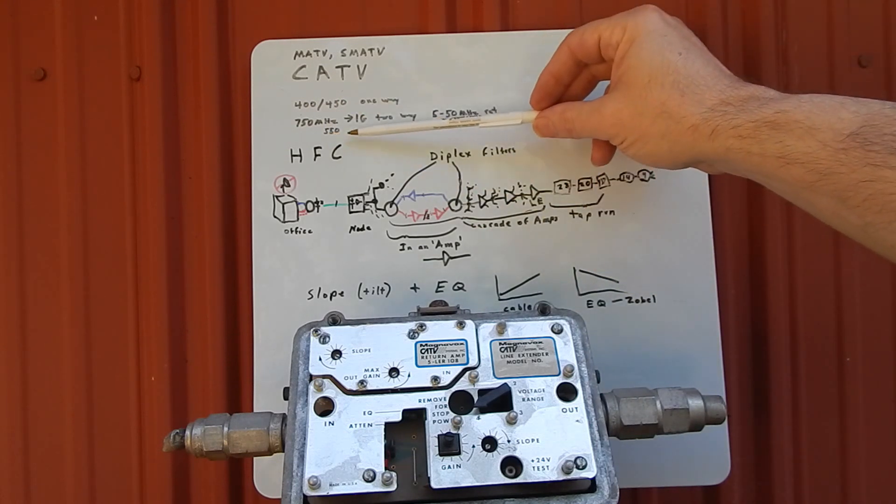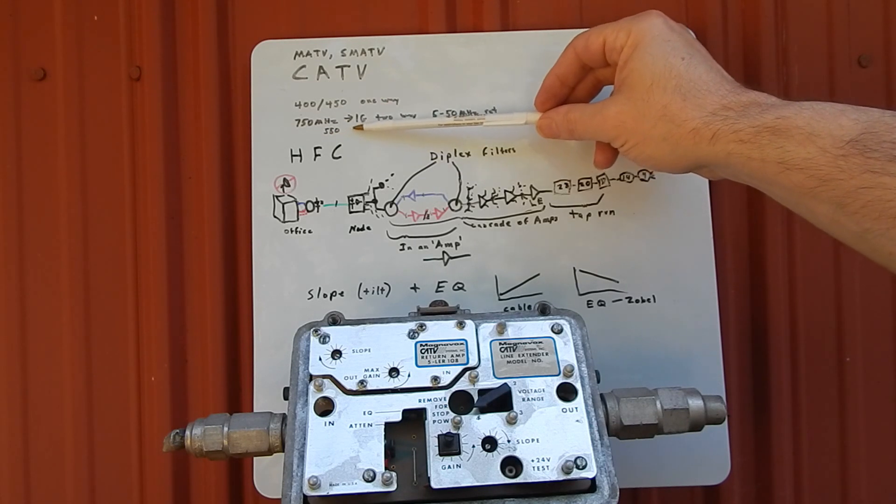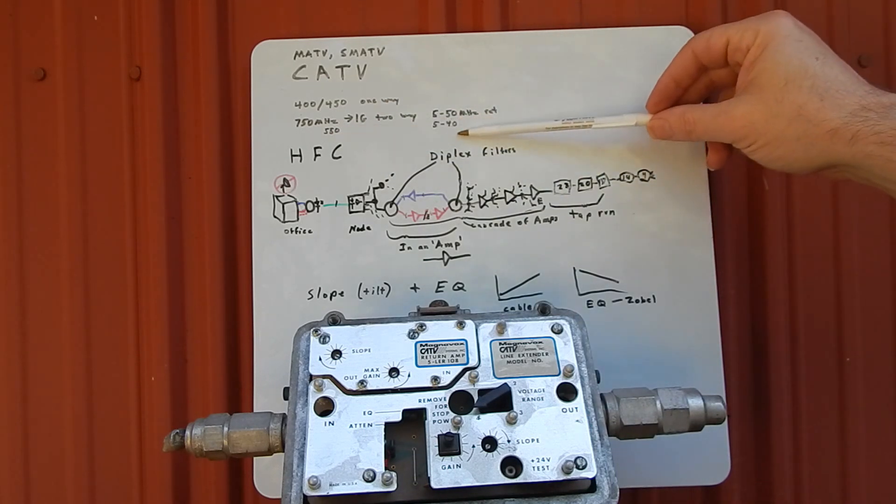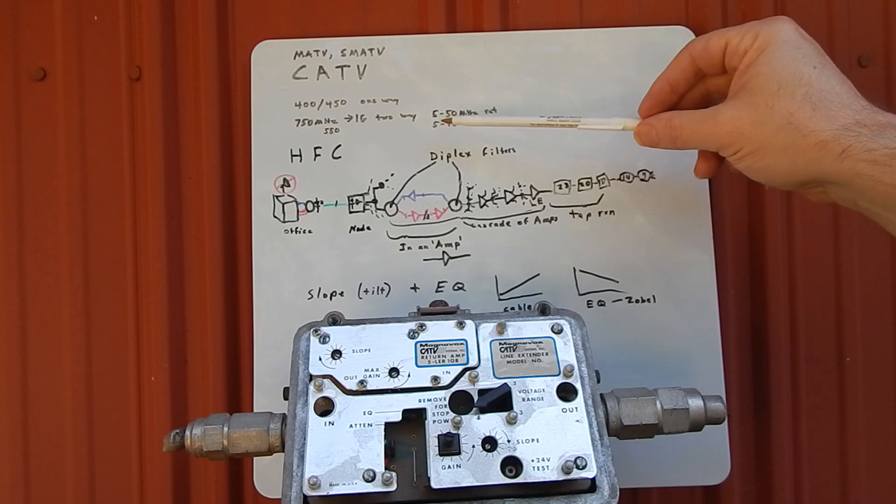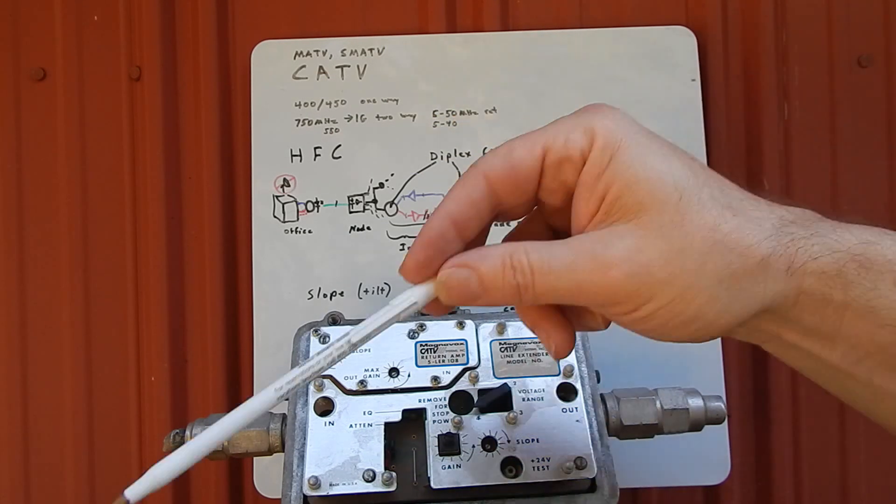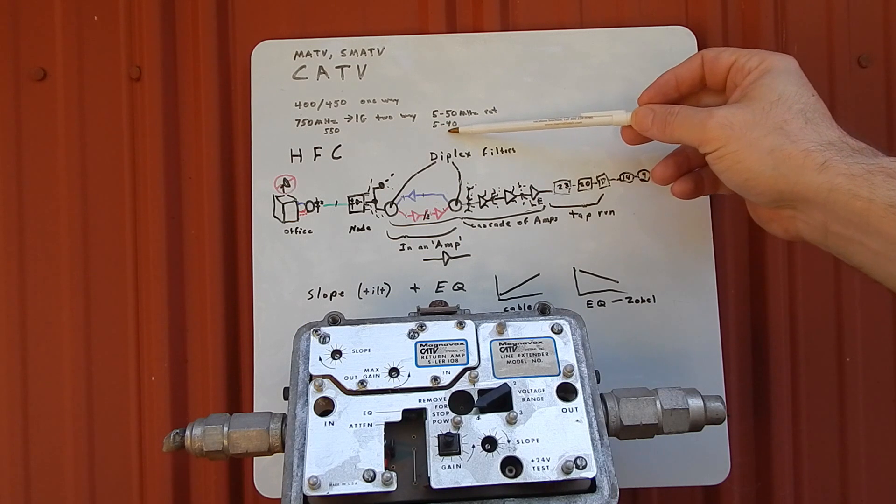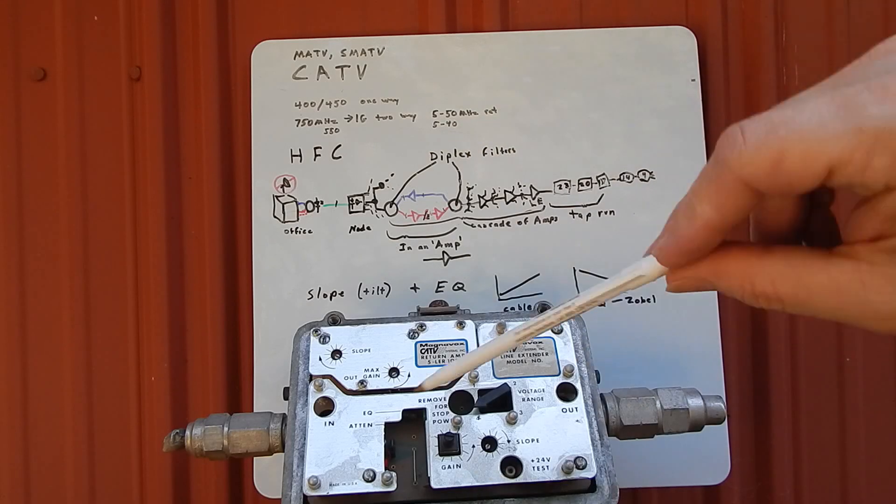They didn't intentionally give themselves such a small area, this 5 to 50. In fact, the last system I worked at was an older system, only 550 megahertz and only 5 to 40 megahertz return. That's because the diplex filters in these amps weren't as tight as they are in modern amps. From 50 megahertz going one way to 54 megahertz going the other way with nothing in between—that has to be one heck of a diplex filter. These amps were economized by having a looser diplex filter, so they could do their cutoff and boost in that 40 to 54 megahertz area.